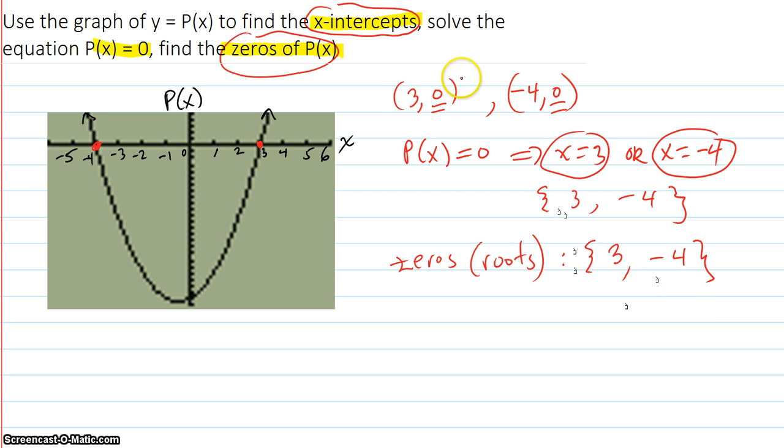So, the intercepts are points, and the zeros and the solutions to the equation are x values, 3 and negative 4.